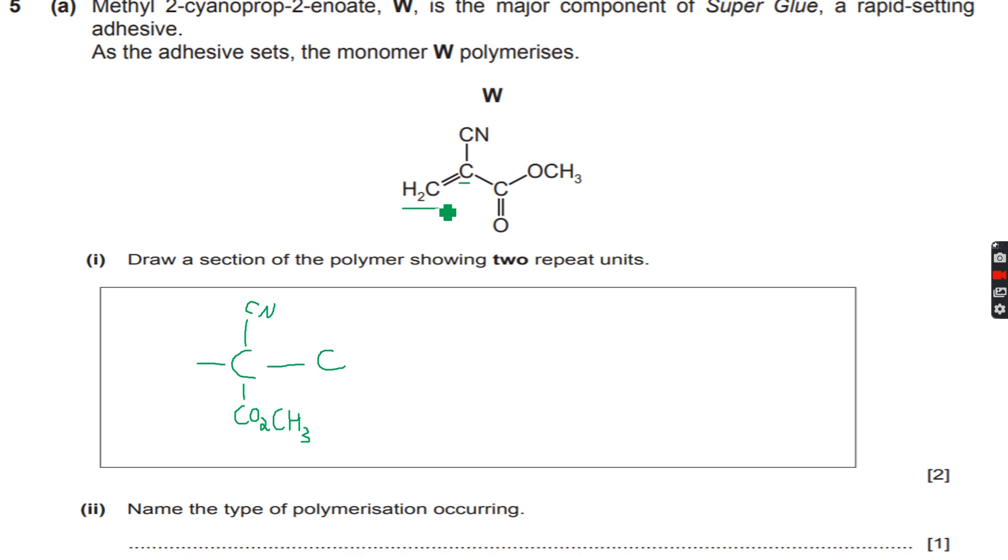Then we have to take this carbon which was initially double bonded. It is attached to two hydrogen atoms. So this is one repeat unit, but we have to draw two, so we will just carry out the same thing again: CN, CO2CH3, and CH2.